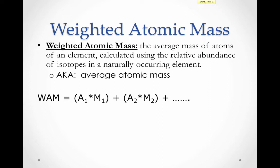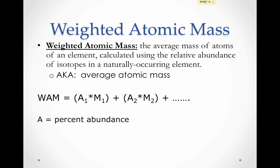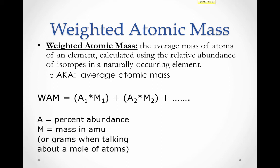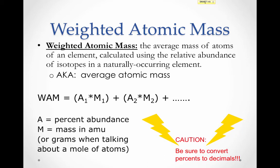To calculate the weighted atomic mass, we take the abundance of the first isotope and multiply it by the mass of the first isotope. Add that to the abundance of the second isotope multiplied by the mass of the second isotope, and continue on for as many isotopes as you have. Here, A is the percent abundance and mass is the mass in AMUs, or in grams if we're talking about a mole of atoms. An important thing to remember: convert your percent abundance to decimals before doing the math.